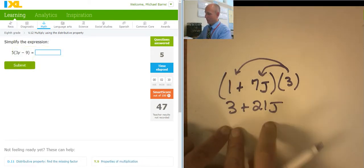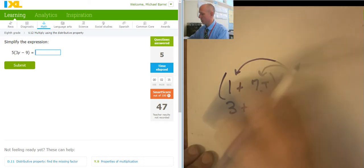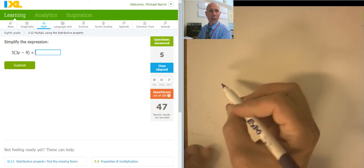And IXL would have accepted it as 21J plus 3, which is actually a nicer answer. It's a prettier answer.